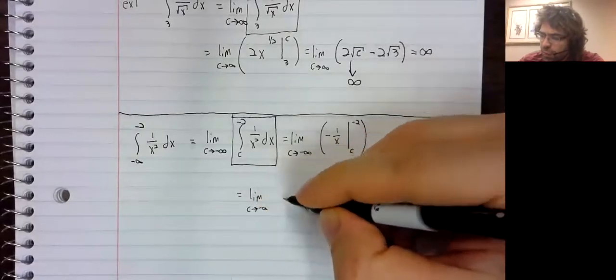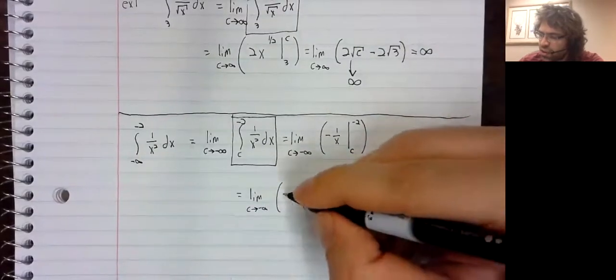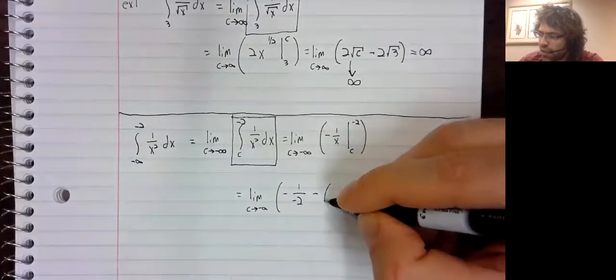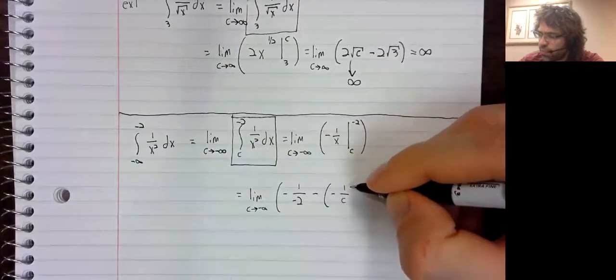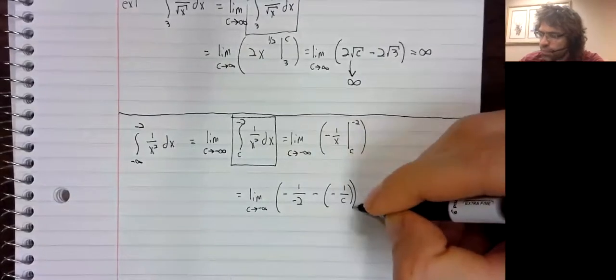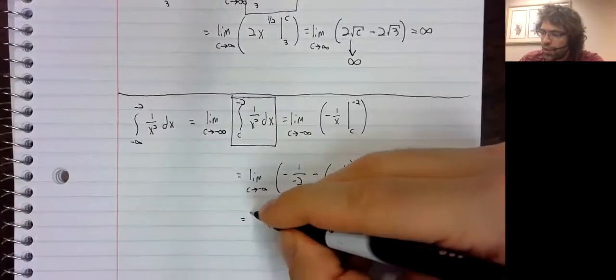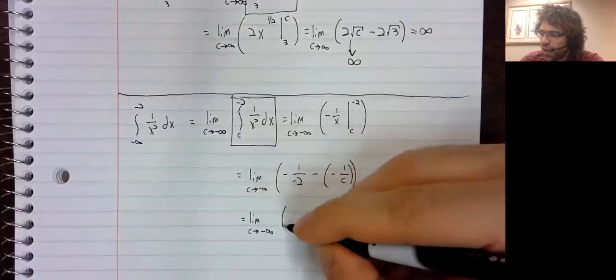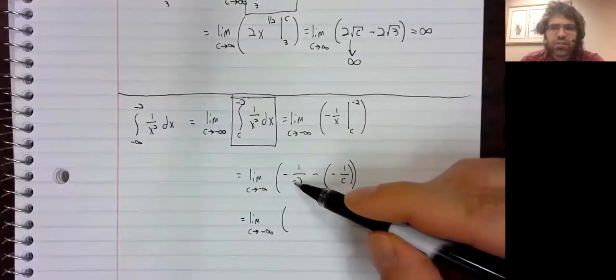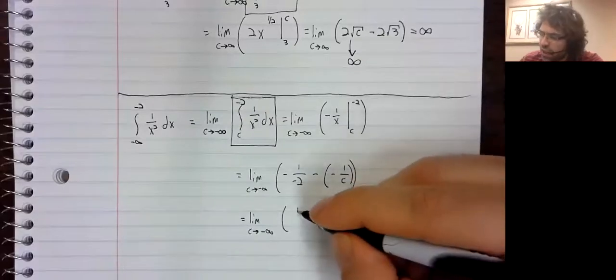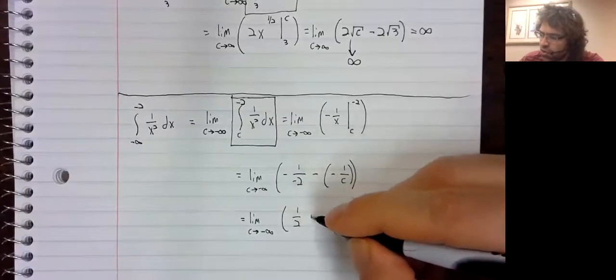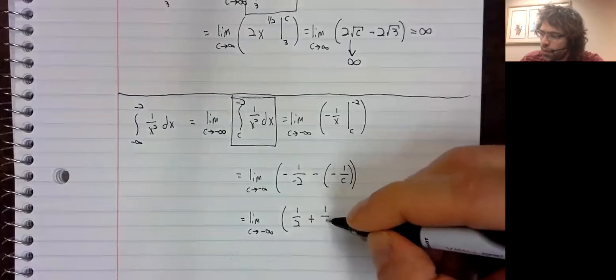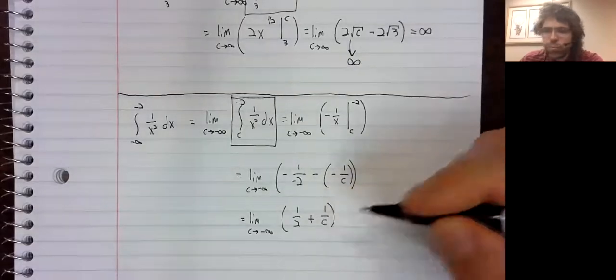So when we stick those limits in and subtract them, we get positive one half, this negative sign and this negative sign cancel. Plus, again, negative signs cancel. One over c.